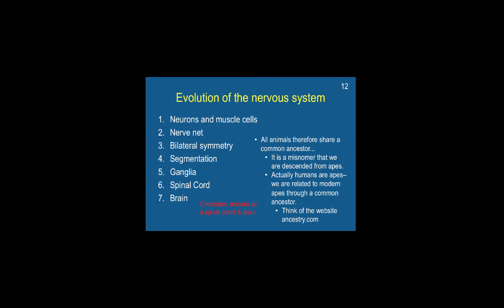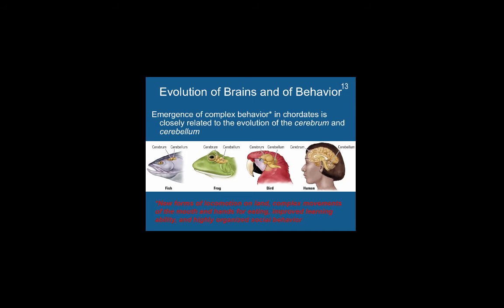A common term for animals with a spinal cord and a brain is chordate — higher order animals are known as chordates. Chordate evolution is closely related to the evolution of the cerebrum and the cerebellum. The cerebrum is our higher order brain, primarily responsible for higher order cortical function. The cerebellum is the other major structure. So we have the cerebrum and the cerebellum.